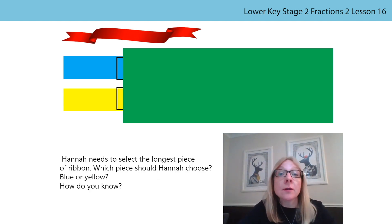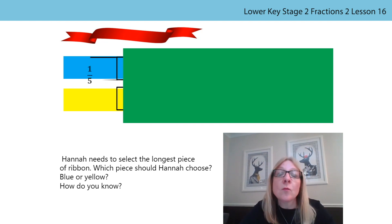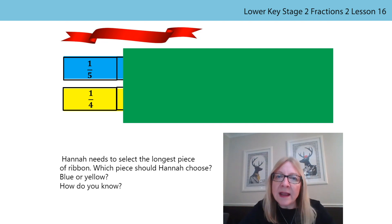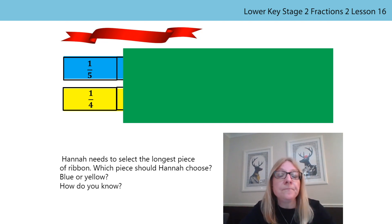Hannah needs to select the longest piece of ribbon to finish her art project. Some of the ribbon is hidden, so can we tell which piece she should choose? What if we knew what fraction of the whole we could see? This is one fifth of the blue ribbon, and this is one quarter of the yellow ribbon. Does that help us work out which is the longest? Do you think she should select the yellow ribbon or the blue ribbon? Try to imagine the ribbons — pause the video and draw what you think each will look like.